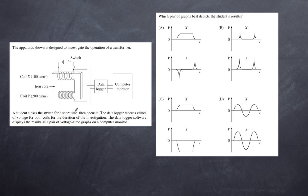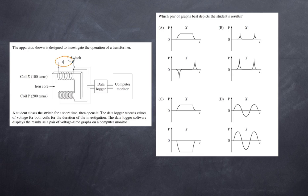Next question: a student closes a switch briefly then opens it; a data logger records voltages for both coils and displays voltage-time graphs. With a DC voltage, the primary voltage rises rapidly when switched on, remains steady, then drops when switched off — a standard square-wave-like profile.